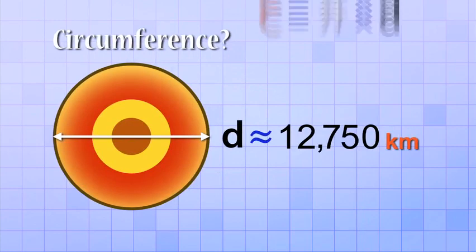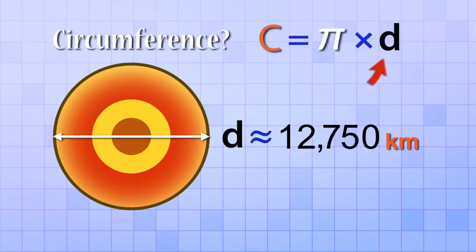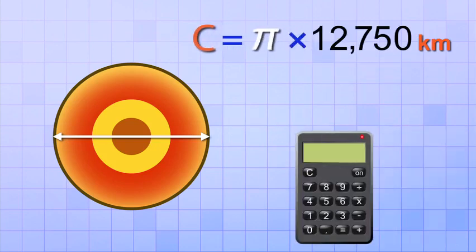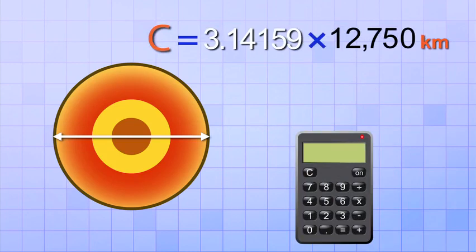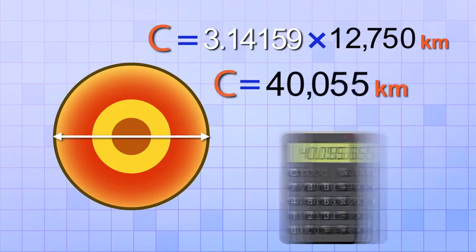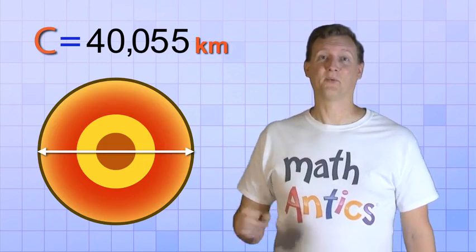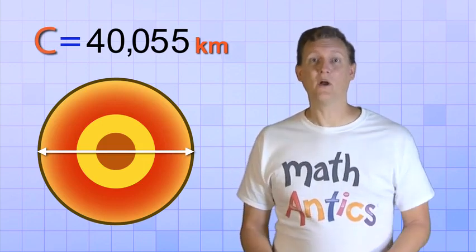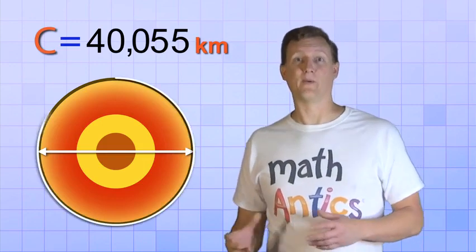Great! Then to find the circumference, we just need to multiply that diameter times pi. Now I'm definitely going to use a calculator for this. And I'm going to use a more accurate version of pi, since this is such a big distance. So 12,750 times 3.14159 equals 40,055 kilometers to the nearest kilometer. Wow! That's a pretty big circumference! No wonder it takes so long to go all the way around the Earth.